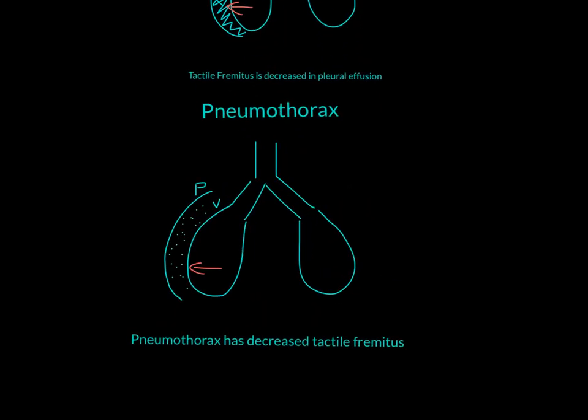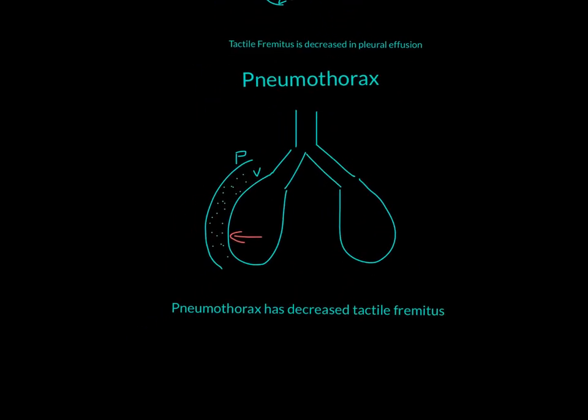Same thing with the pneumothorax. It's also going to have decreased tactile fremitus, just like in pleural effusion, because the sound is contained in this area, in the visceral. When it's contained here, it's not going to be amplified because air is also a poor facilitator of sound. So when it tries to travel, it can't because it's first absorbed by the visceral pleura. And then when it tries to go out, it has a harder time because now since there's air, once again, air is not a good conductor of sound. So it will act as a further blockade of the sound.